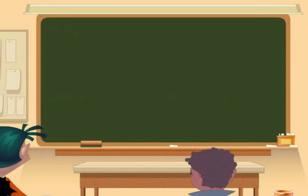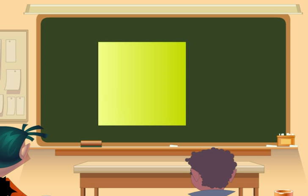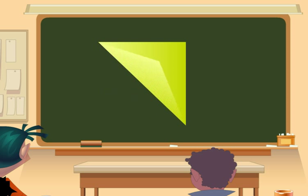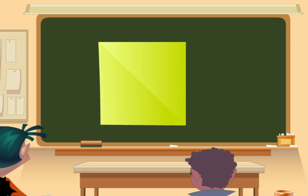You can also form an acute angle by folding and unfolding a sheet of paper. We take a sheet of paper and fold it like this. Now let me unfold it. Look at the crease, look at the edge of the sheet, and look at the angle formed by the two. This is an acute angle.